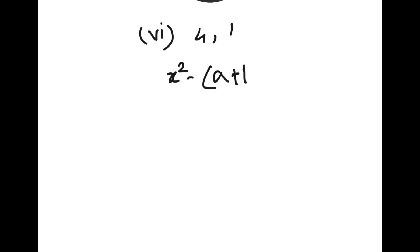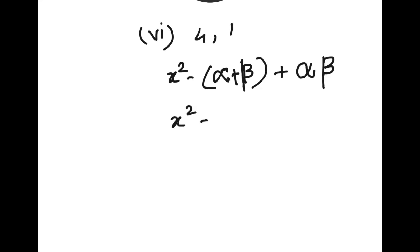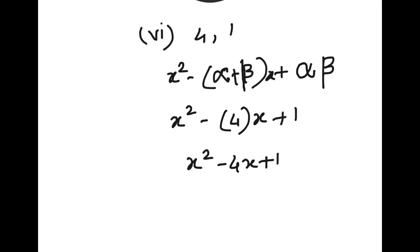The sixth and last question: alpha plus beta is 4 and alpha into beta is 1. Substituting into x² - (α+β)x + αβ: x² - 4x + 1. We substitute and get the quadratic polynomial x² - 4x + 1.